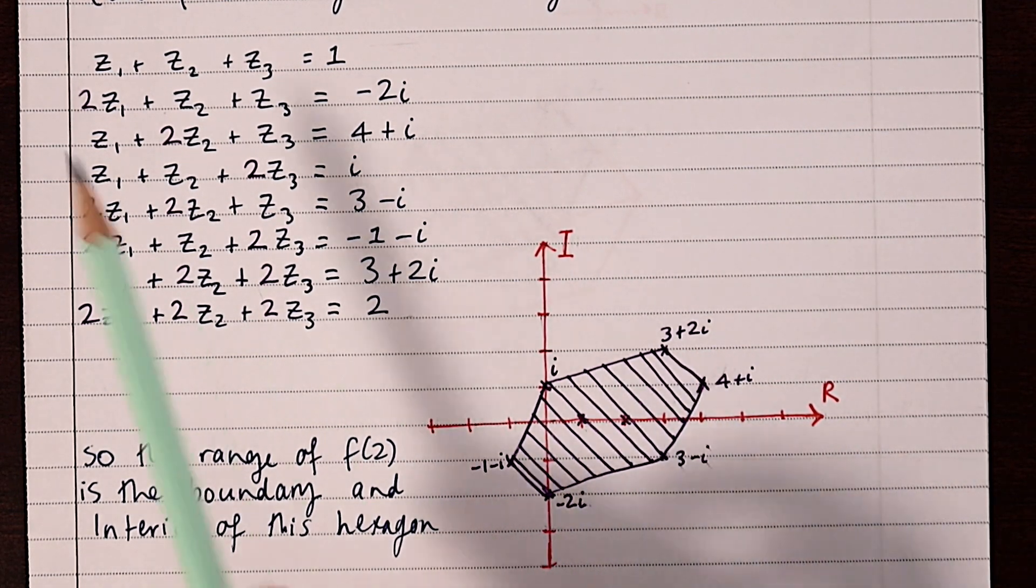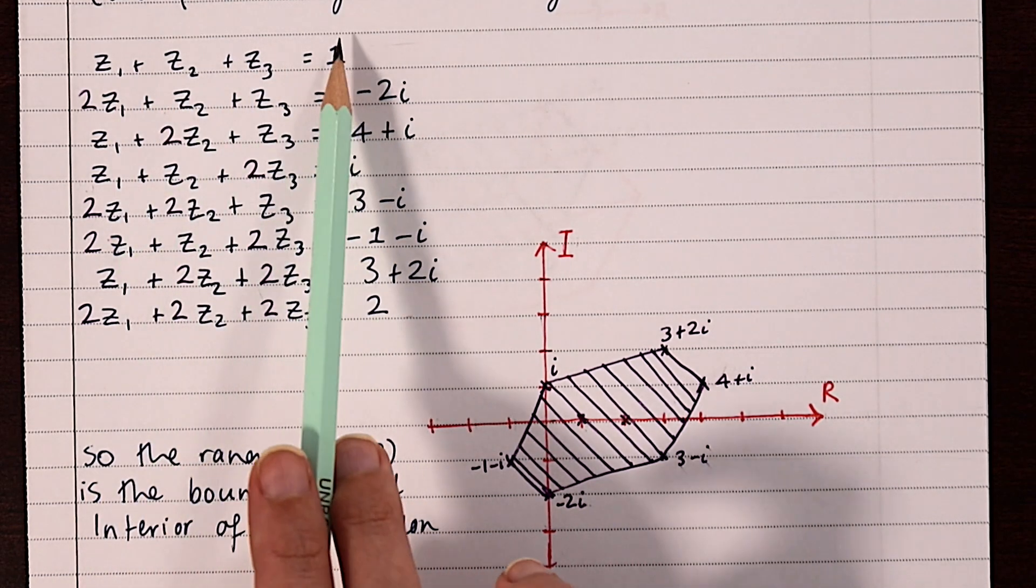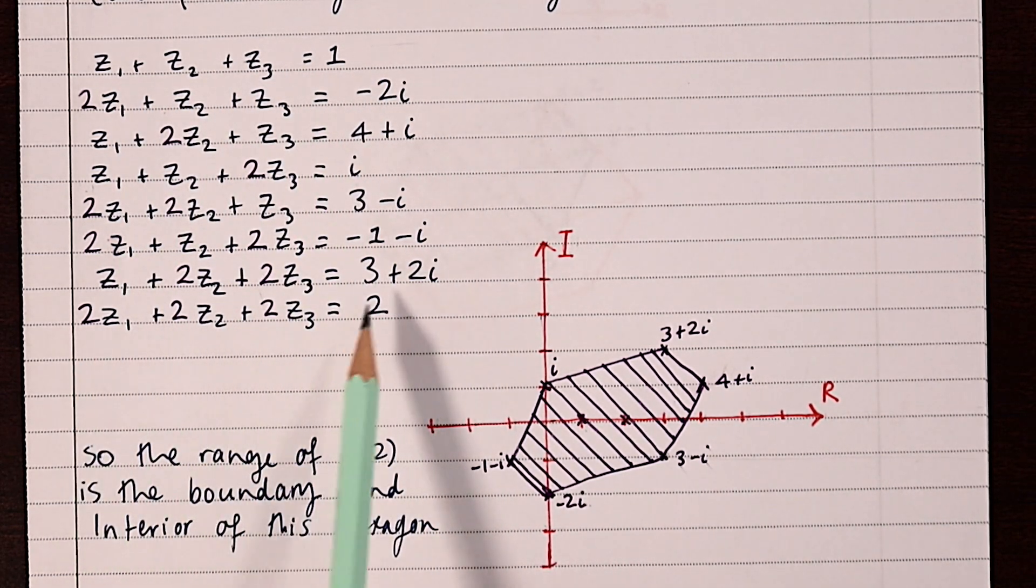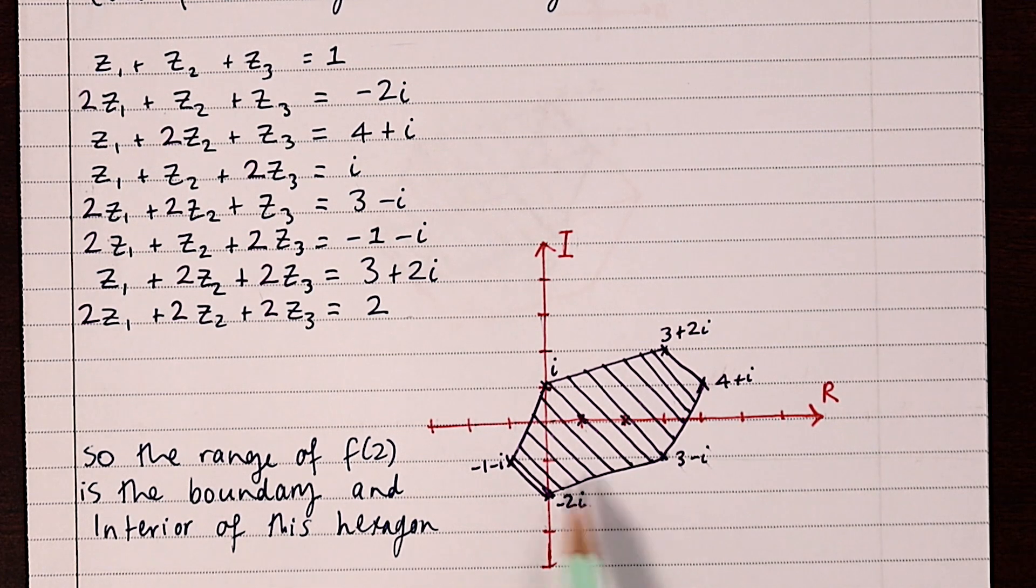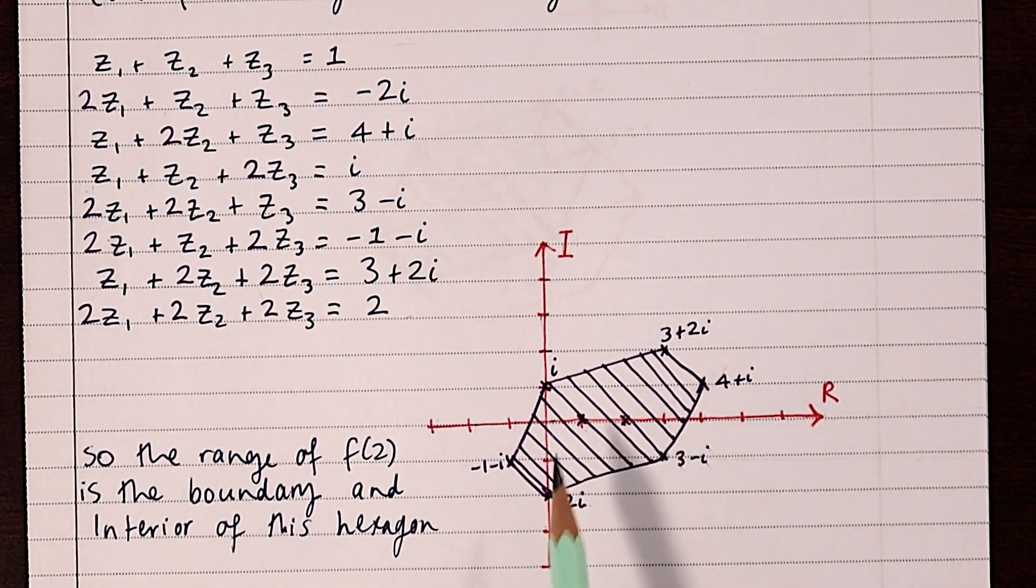You can notice that when alpha, beta, and gamma are all equal to one or all equal to two, that point falls within the shape and so isn't actually necessary to be able to draw the boundary. But you might ask, why does the shape look like this?